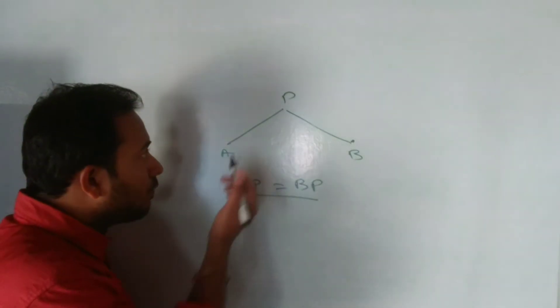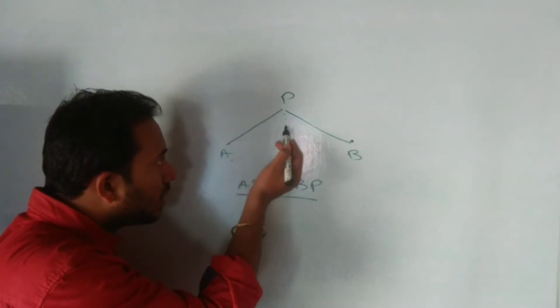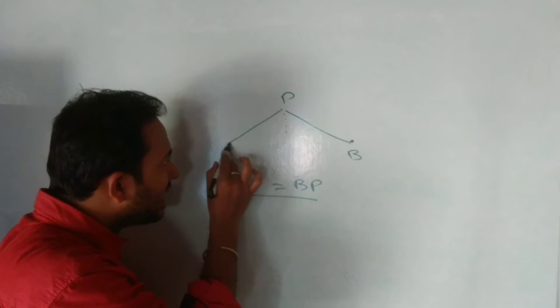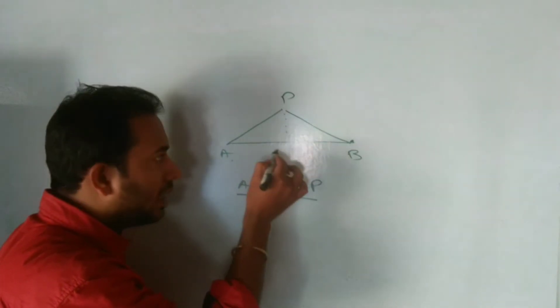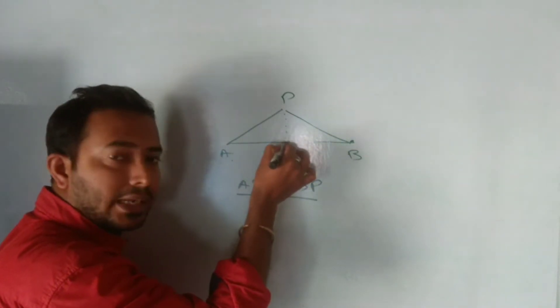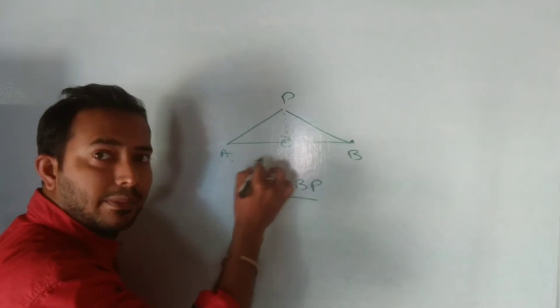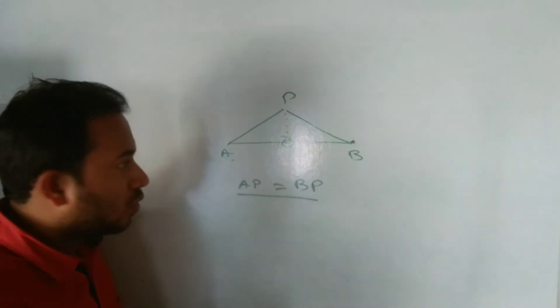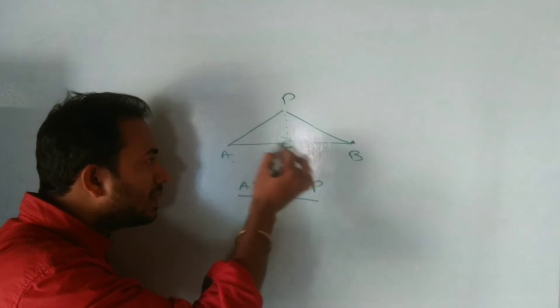Now if this point slowly comes at the line segment of AB, or we call on the line segment of AB, then this particular point is the midpoint.